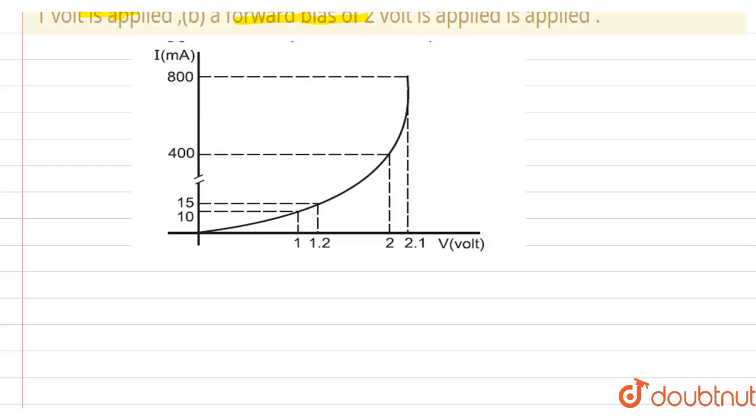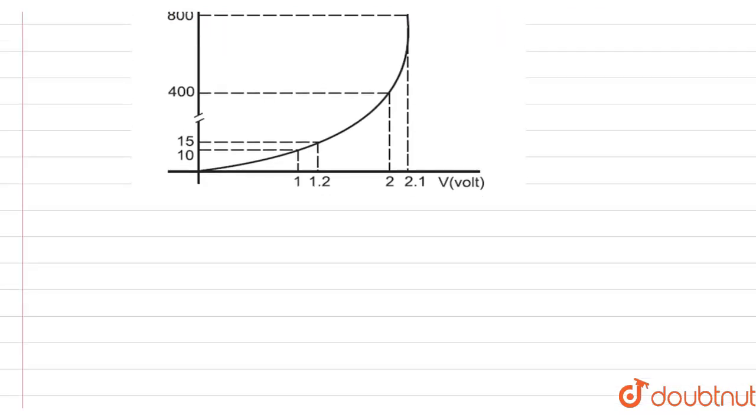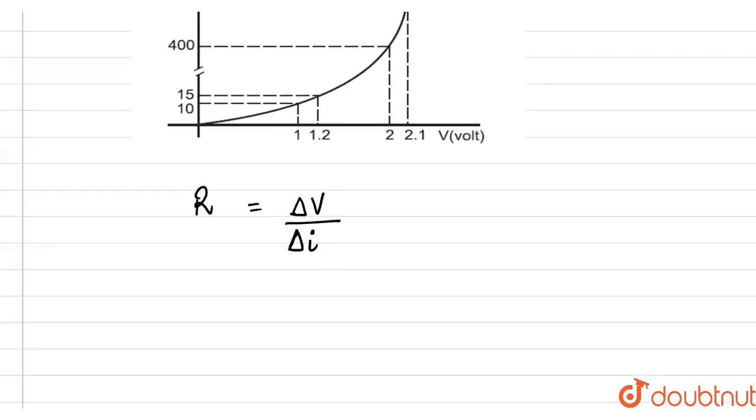Now, we know that the dynamic resistance of a PN junction diode is given by R equals delta V divided by delta I, where delta V denotes small change in the applied potential difference and delta I denotes the corresponding small change in current.